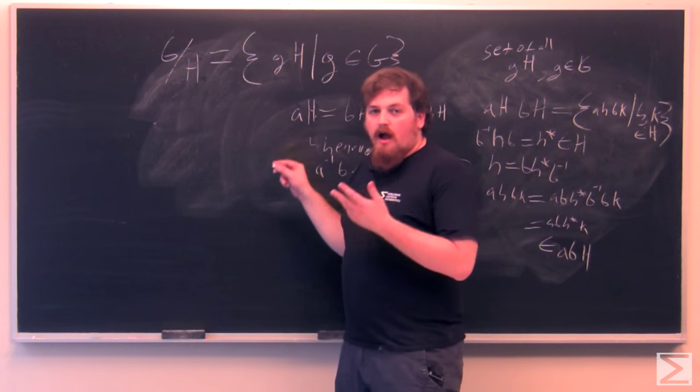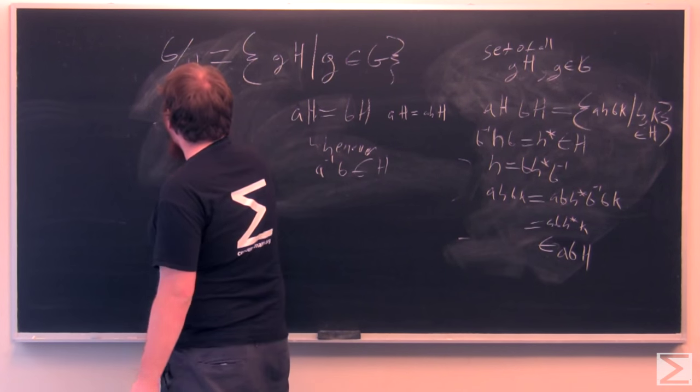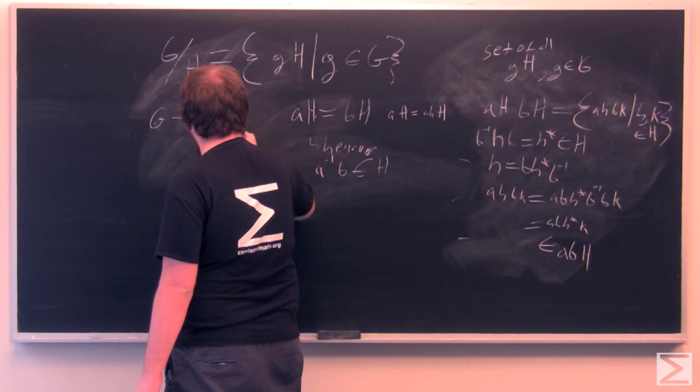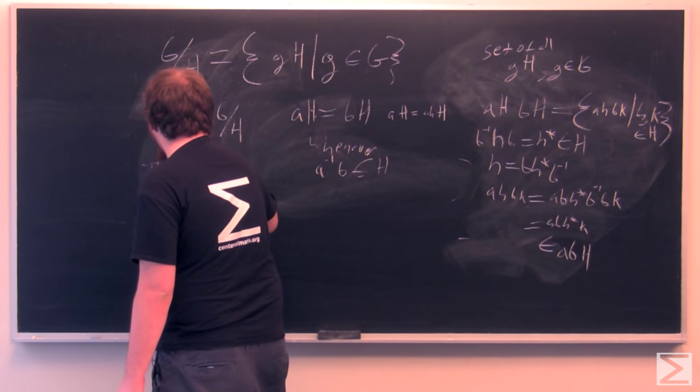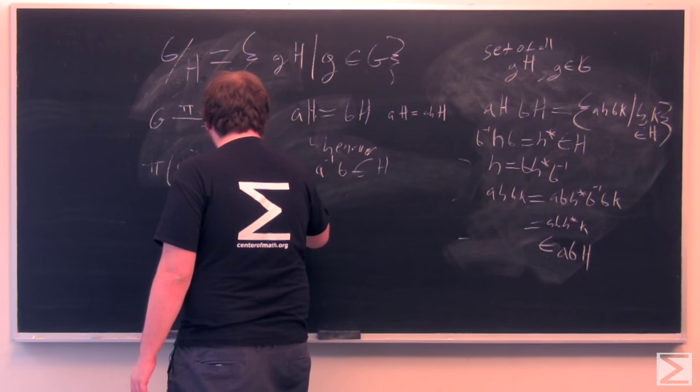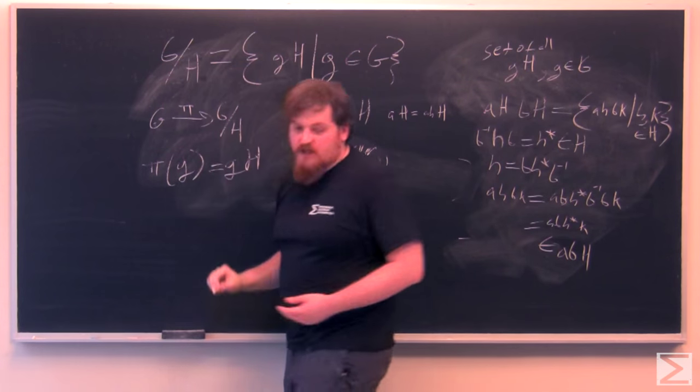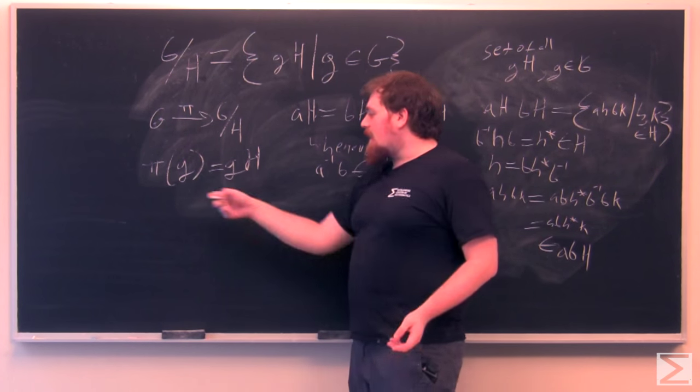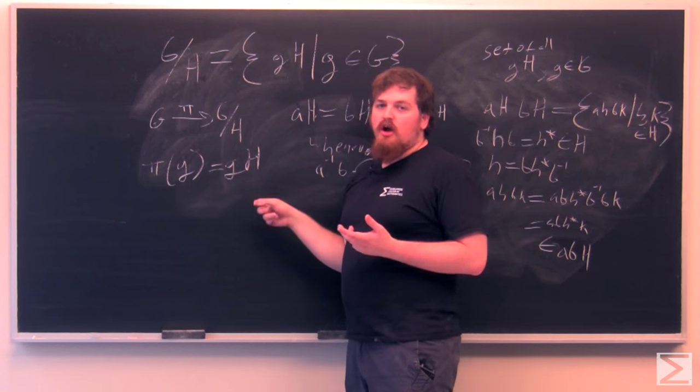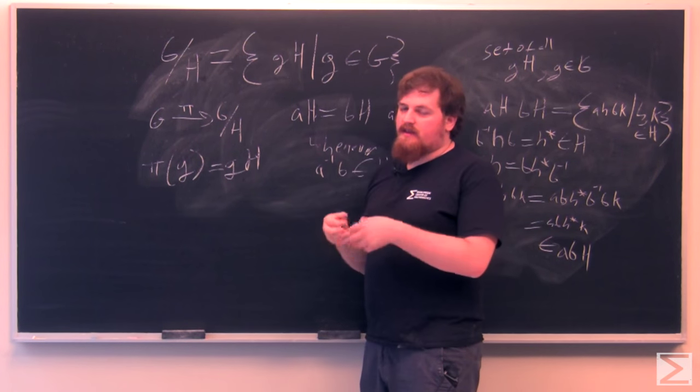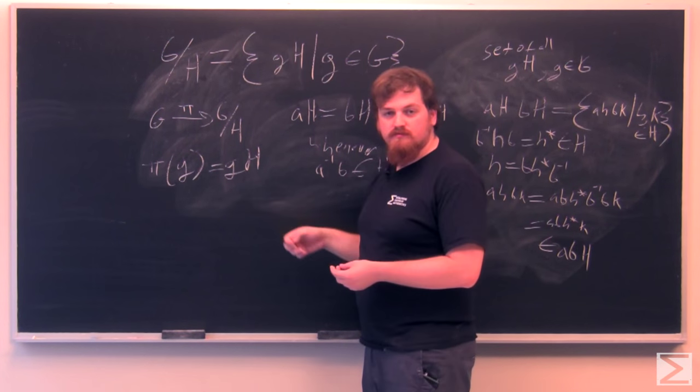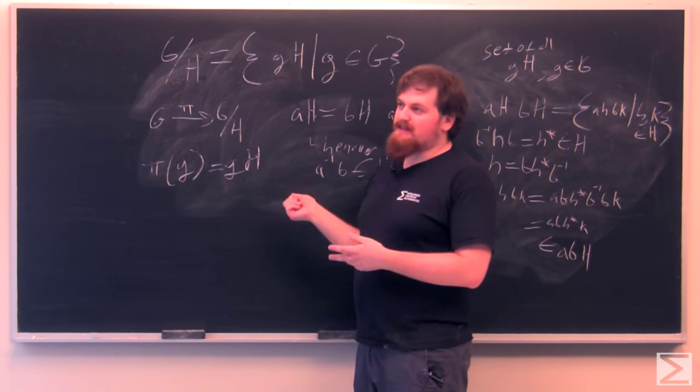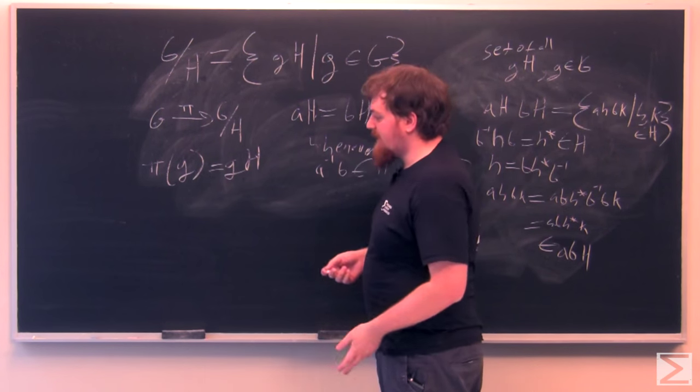So we have our G mod H, but what we can do here is we can make a homomorphism. I'll call it pi for projection, where pi of G equals GH. The kernel of pi here is just going to be H, because anything that's not in H will produce a coset that's not the identity element of G mod H, which is just the coset H. Anything that is in H, you'll get a lowercase h, uppercase H, and lowercase h is in uppercase H. So that's just the coset H or EH when E is the identity of G.